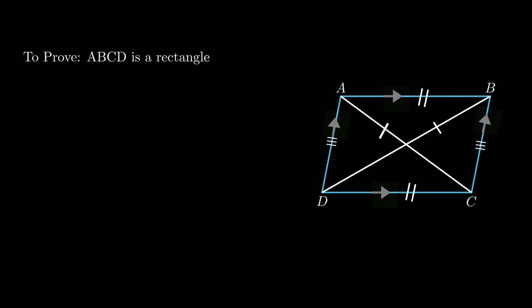As diagonals are equal, therefore diagonal AC is equal to diagonal BD. Now from the given conditions we need to prove ABCD is a rectangle. We need to prove each vertex angle as 90 degrees.